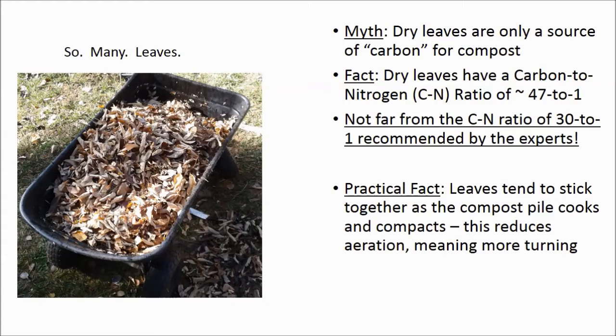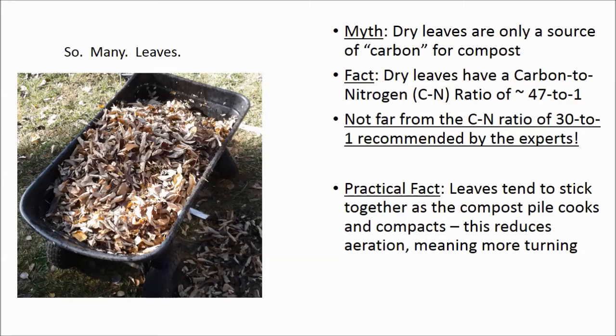One practical issue related to leaf-based compost is its texture. Specifically, as the pile cooks, the leaves collapse into a much smaller volume. You'll notice that the leaves will clump together. It's hard to get fresh air to the bacteria that digest the leaves and produce the heat, so you'll probably end up turning the compost pile more often than a pile made with wood chips. Industrial composters like the wood chips because they don't compact as much as leaves when the compost cooks. We can add a bulking agent to keep air space between the leaves, but what to use?